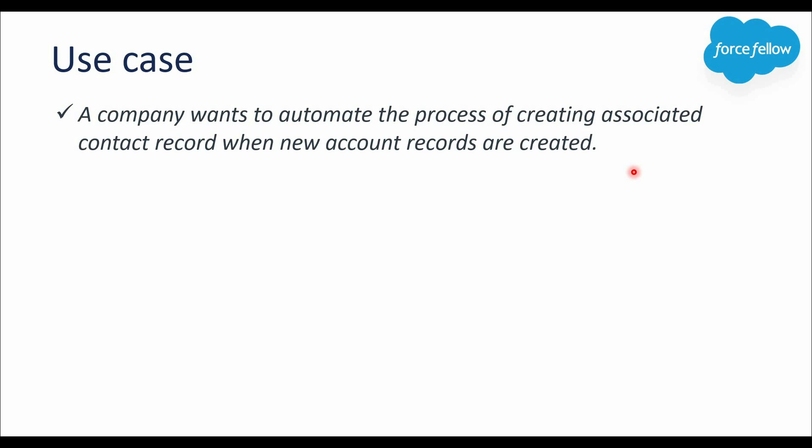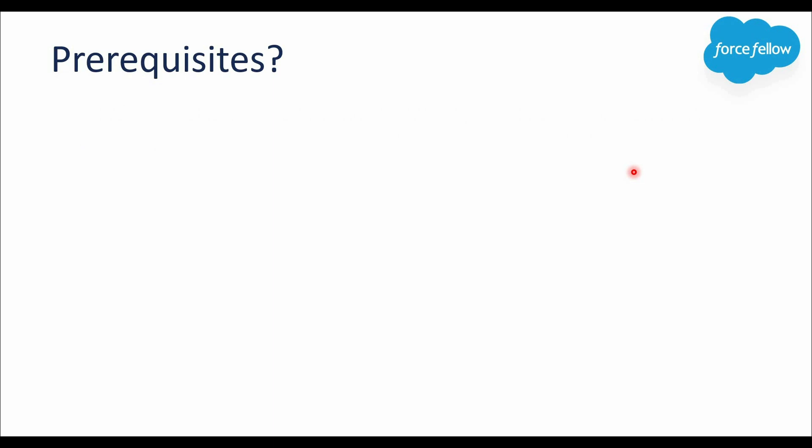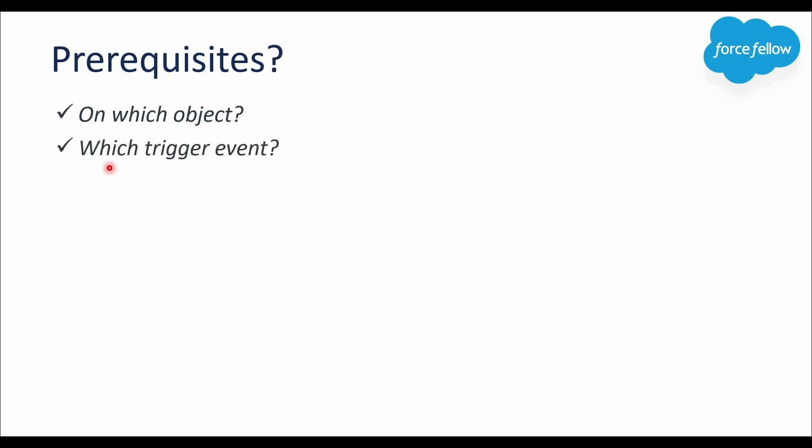Before moving into practical implementation, let's cover a few important questions we should always ask ourselves before writing a trigger for any requirement. The first question is: on which object should we create the trigger? To identify this, we need to know the triggering point. In our requirement, we create a contact when a new account is created, so the triggering point is account creation — we perform an insert operation on the account object.